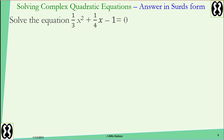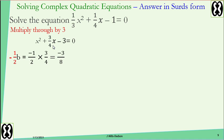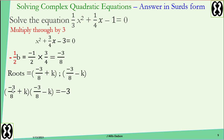Let's try one more where everything except the constant is a fraction. We still want the coefficient of x squared to equal 1. Multiply every term by 3 to clear fractions and get a new equation. Then divide b, which is 3 over 4, by negative 2. That gives negative 3 over 8. Create the root expressions: negative 3 over 8 plus k and negative 3 over 8 minus k — it doesn't matter which comes first. Multiply the roots and set equal to the constant, negative 3. Use difference of two squares: negative 3 over 8 all squared gives 9 over 64.